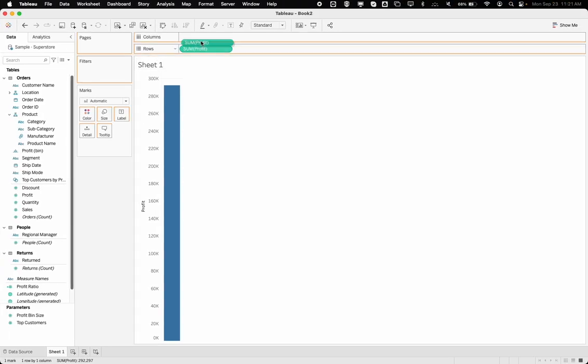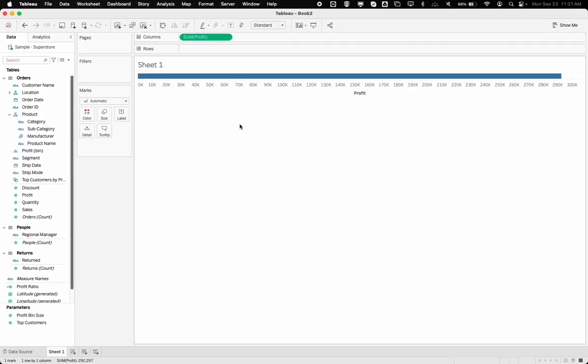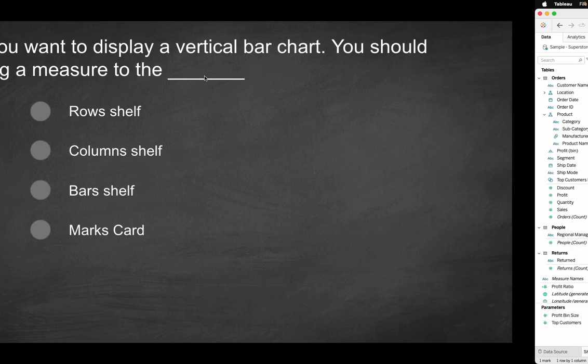What if I drag it to the column shelf? Now you have a horizontal bar. So it's important to really understand and kind of just know off the top of your head what the visualization is going to look like if you drag certain components to the column shelf as opposed to the row shelf. So obviously with a vertical bar you want the rows. For a horizontal bar you're going to want the columns.